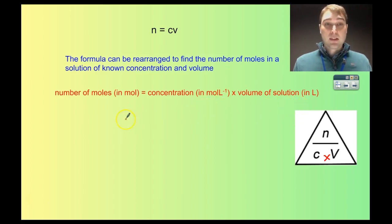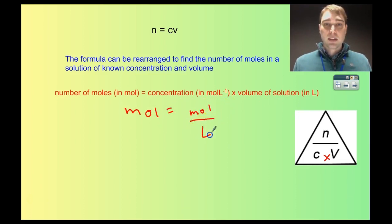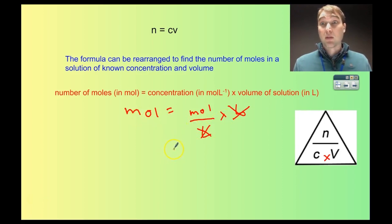This makes sense if we look at our units. Moles equals moles per litre — that's moles divided by a litre — times our volume in litres. The litres cancel out, and we get moles equals moles. So that all works out.